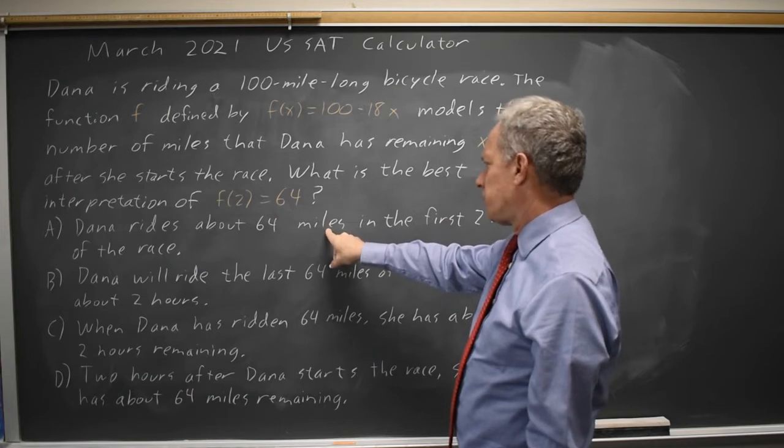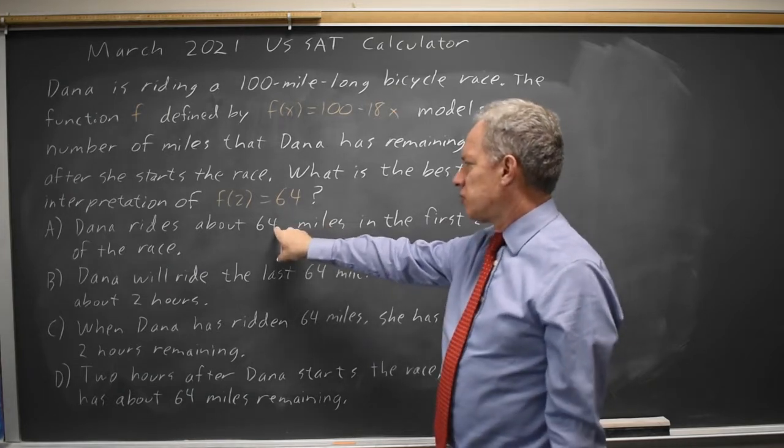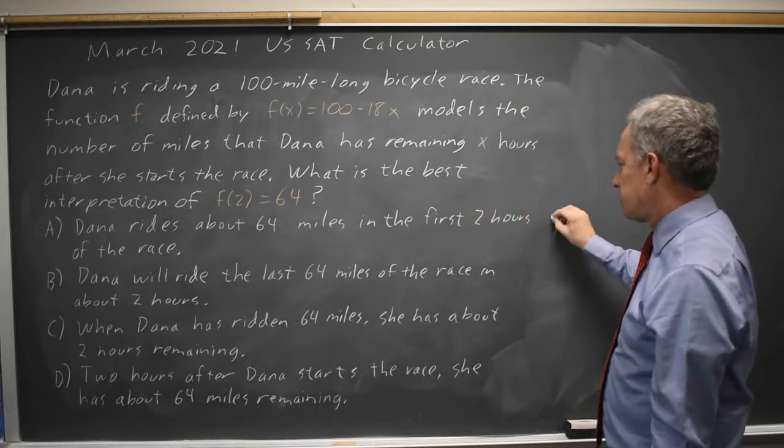In A, 64 is miles ridden, not miles remaining, so that's not correct.